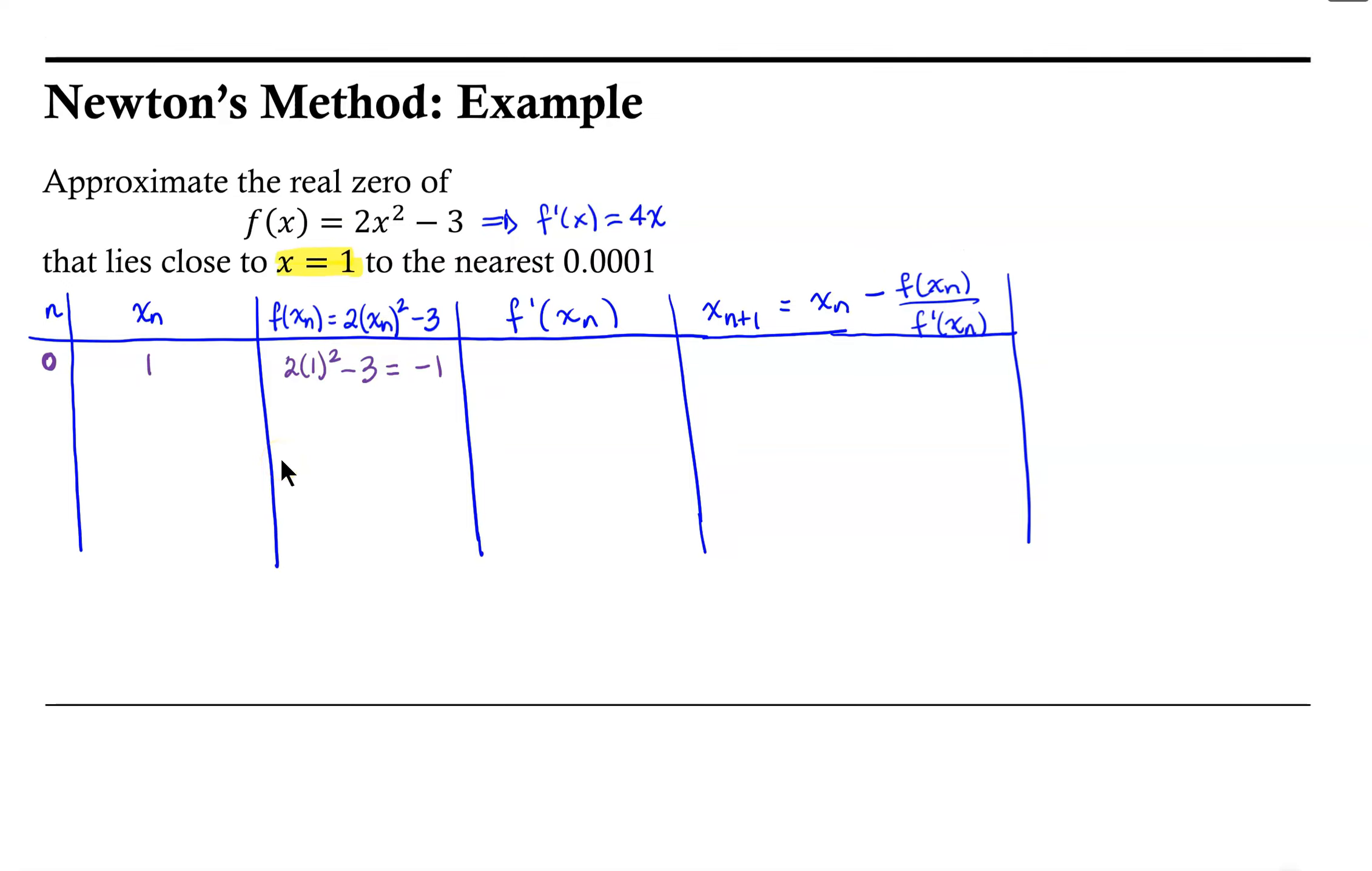Now our xn is 1. So this would be 4 times 1 or simply 4. So our next approximation to the zero would be xn, which was 1, minus f at xn, that was negative 1, over f prime at xn, which was 4. This is basically 1 plus 1 fourth, or more simply 1.25.